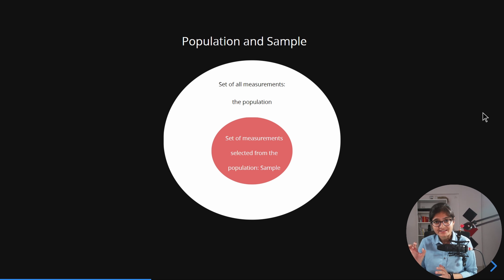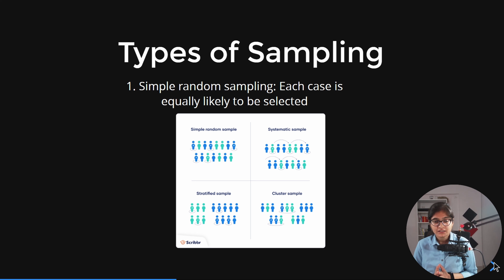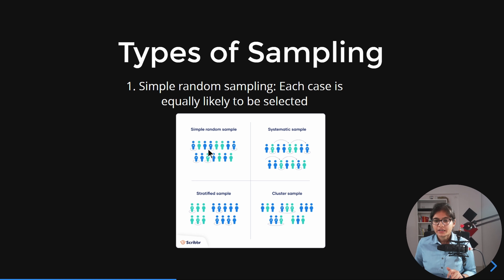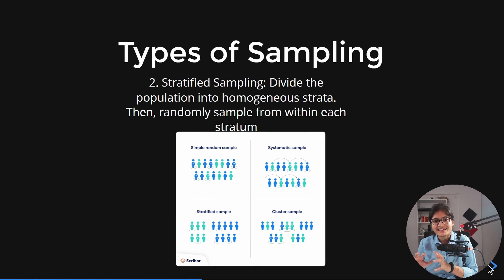Whatever inferences we get for the sample, we automatically assume that those inferences are equally applicable to the complete population. This means it really matters what kind of sample you are picking up and what sampling technique you are using. We will be covering four different kinds of sampling. The first is simple random sampling, where each and every case is equally likely to be selected. In the given image you can see many people — every person has an equal probability of being picked, that's what we call simple random sampling.